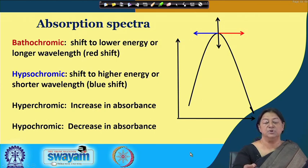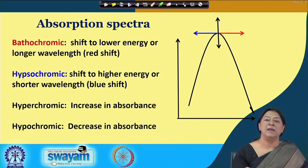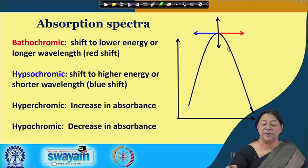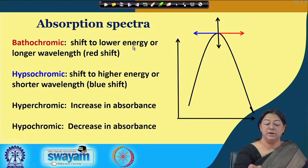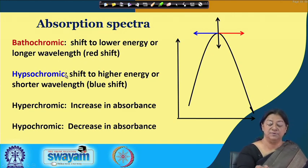When we consider an absorption spectrum — with absorbance on the y-axis and wavelength on the x-axis — we want to see what happens when a protein unfolds. A shift to lower energy means a shift to longer wavelength, called a red shift. A shift to higher energy or shorter wavelength is called a blue shift, or bathochromic shift for red shift and hypsochromic shift for blue shift.